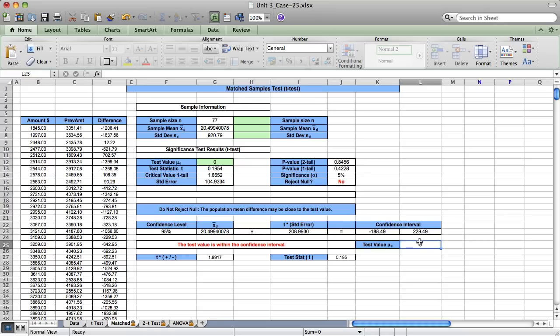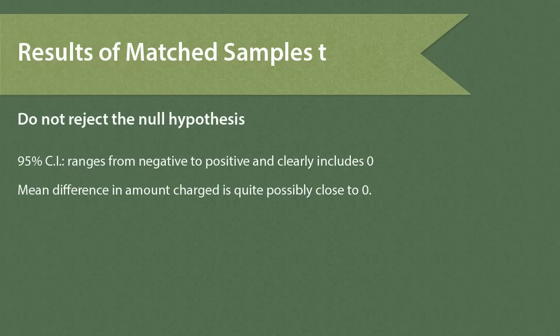It's like saying we're 95% confident that there's been no change in the amount charged from month to month. This test produced no statistically significant results. We do not reject the null hypothesis that mu d equals 0. Our 95% confidence interval supports this — it ranges from negative to positive and clearly includes the value 0. We can conclude that the mean difference in amount charged from month to month is quite possibly a value close to 0.